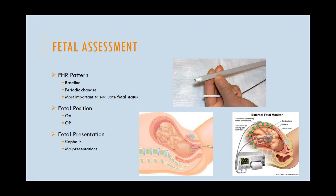We not only have mom to assess, but we also have the fetus to assess. There are a few ways we do a fetal assessment. The very first thing we want to do is determine what the fetal heart rate pattern is — and remember, this is an interpretation by the nurse. We've got to figure out what the baseline heart rate is. We want to know the periodic changes: accelerations, decelerations — and decelerations have several types. We have early decels, late decels, and variable decels.